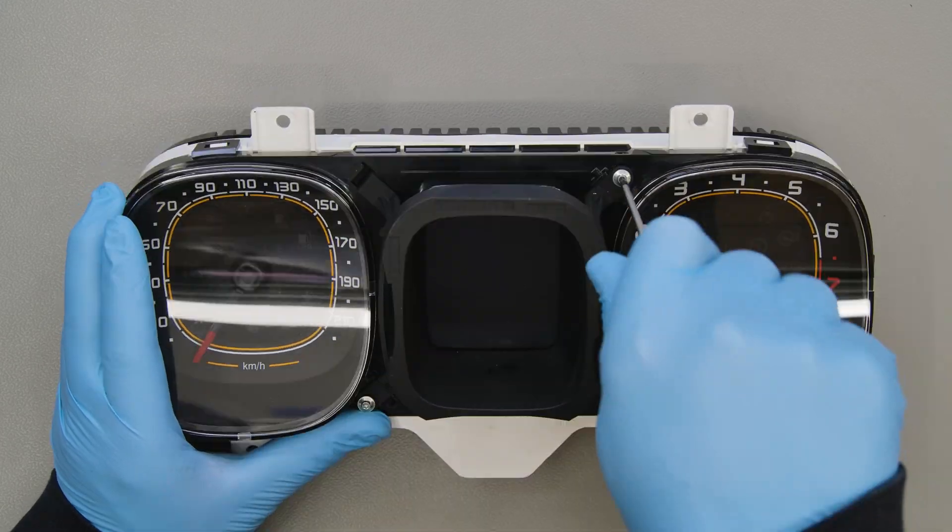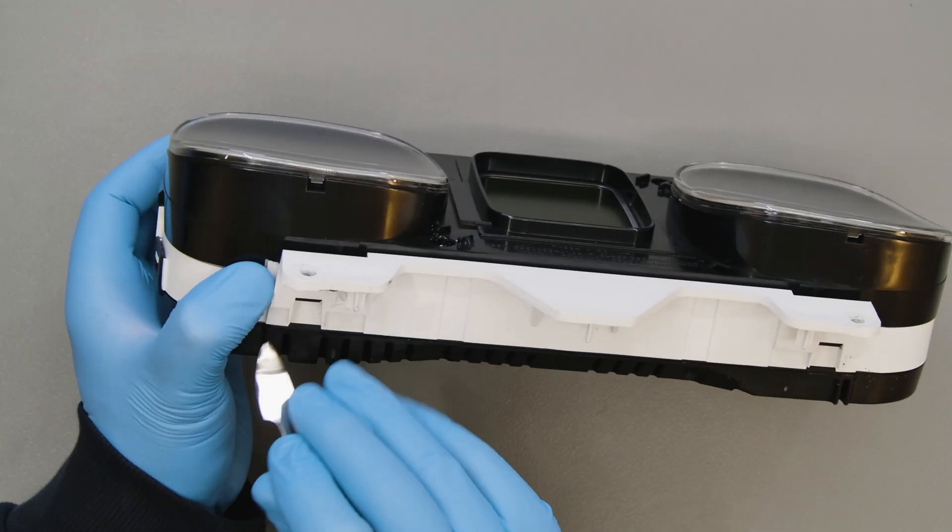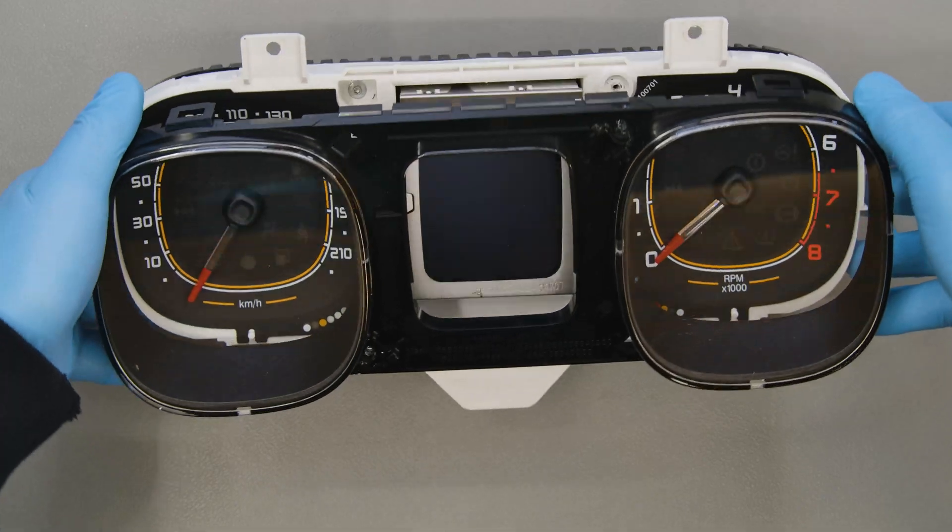Position the dashboard as shown and undo the two front screws to remove the central frame. With the head of the spudger, unhook the plastic clips securing the front part of the cluster and remove it.